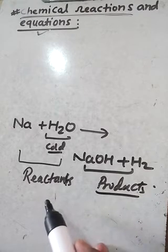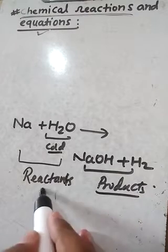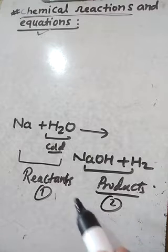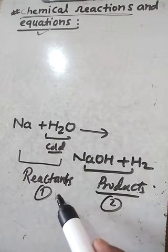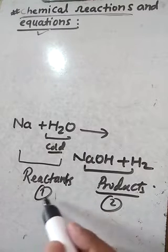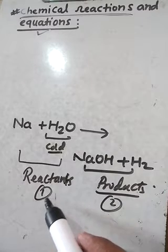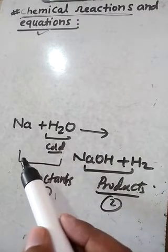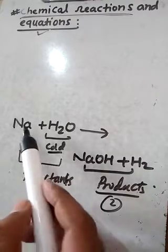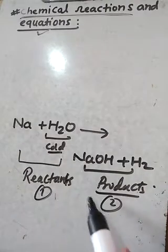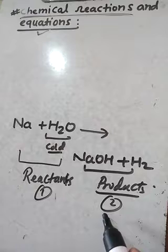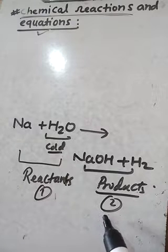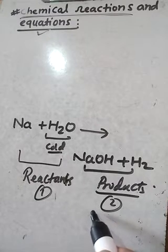In a chemical reaction there are two types of substances: reactants and products. Reactants are those substances which take part in a chemical reaction, and products are those new substances formed during or after a chemical reaction.